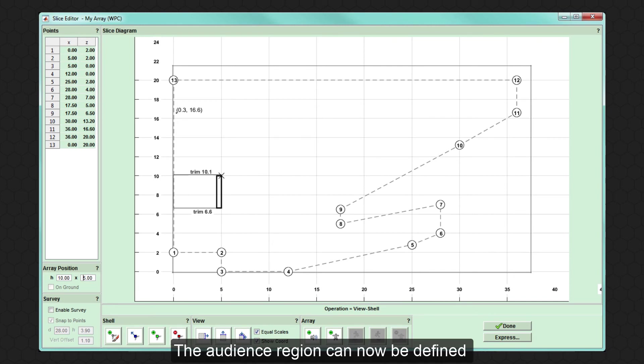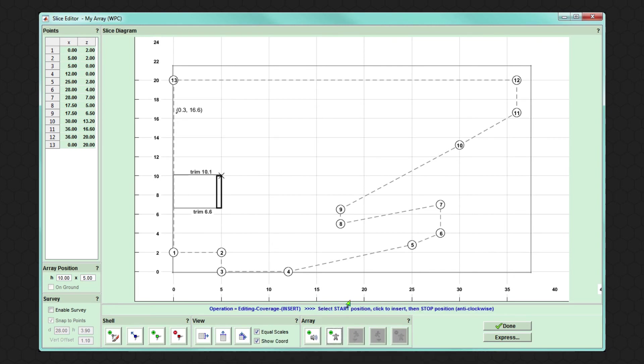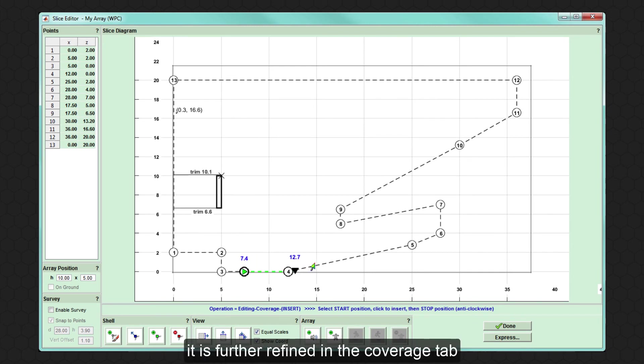The audience region can now be defined within the shell. The slice tab allows the user to draw a single audience region. It is further refined in the coverage tab, dividing it into individual audience regions such as stalls and balconies for example.